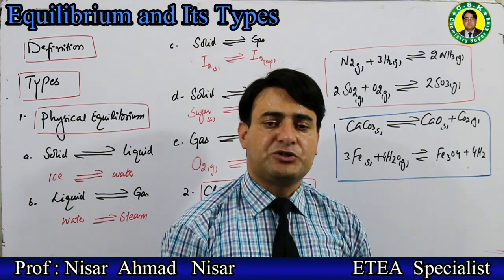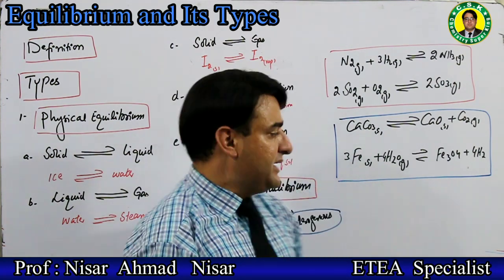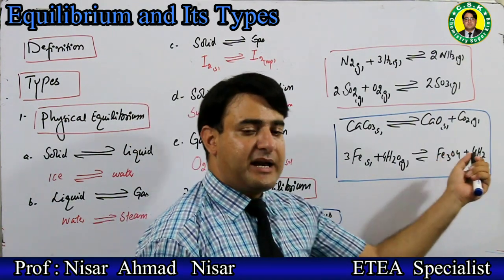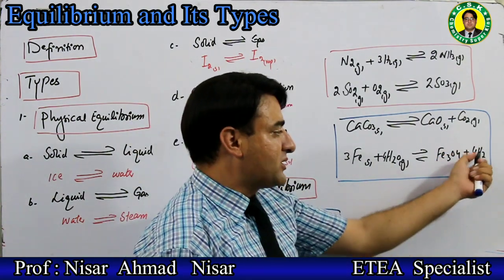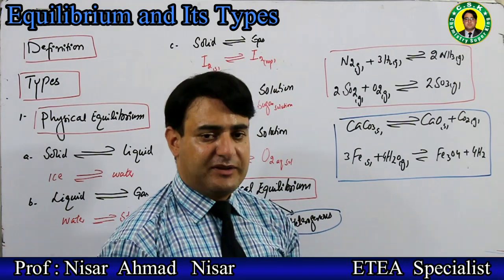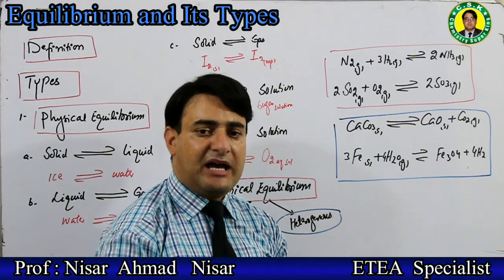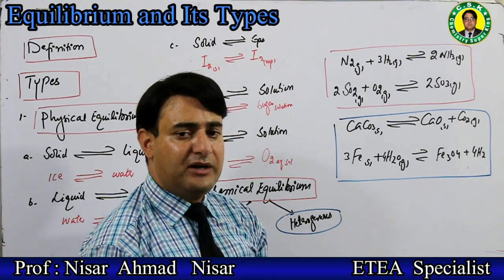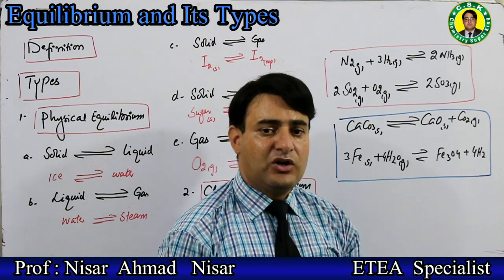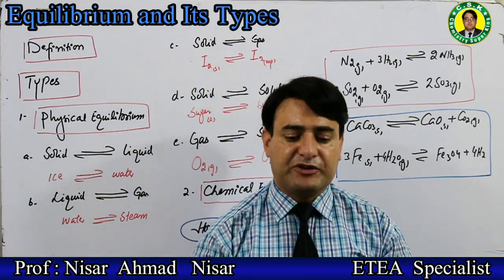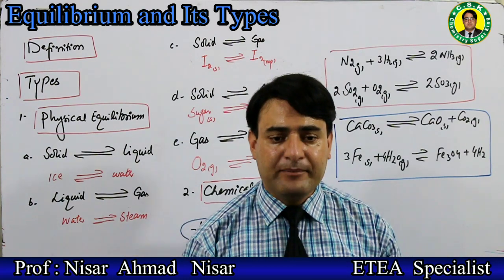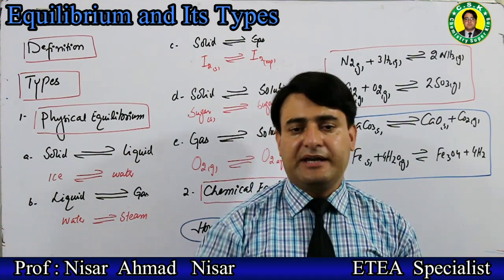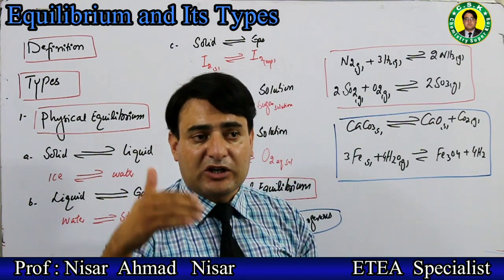For heterogeneous equilibrium, consider the reaction of iron solid with steam (water vapor gas) to form ferric oxide (Fe₂O₃ solid) and hydrogen gas. Iron is a solid and steam is a gas - not all reactants and products are in the same physical state. This is why it is called heterogeneous equilibrium.